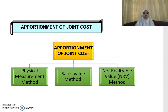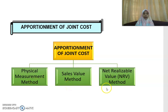Bismillahirrahmanirrahim. Next, we will look into the apportionment of joint cost to joint products. There are basically three methods on how you can allocate your joint cost to your joint product. First is the physical measurement method, next is the sales value method, and the third one is the net realizable value method, or NRV in short.